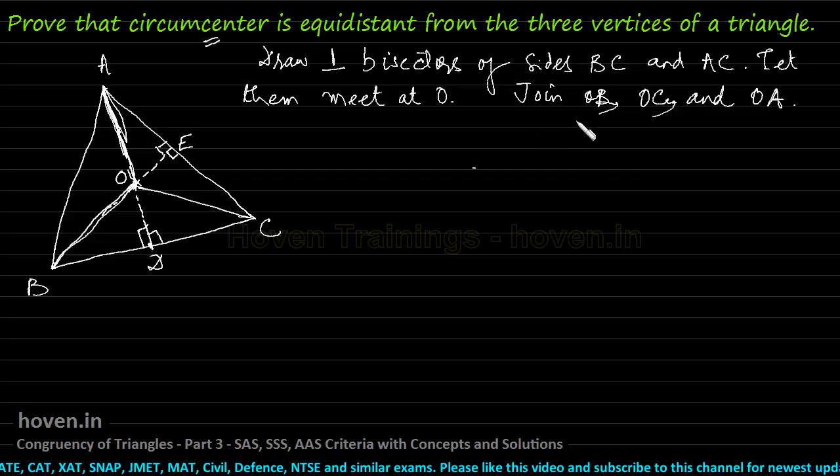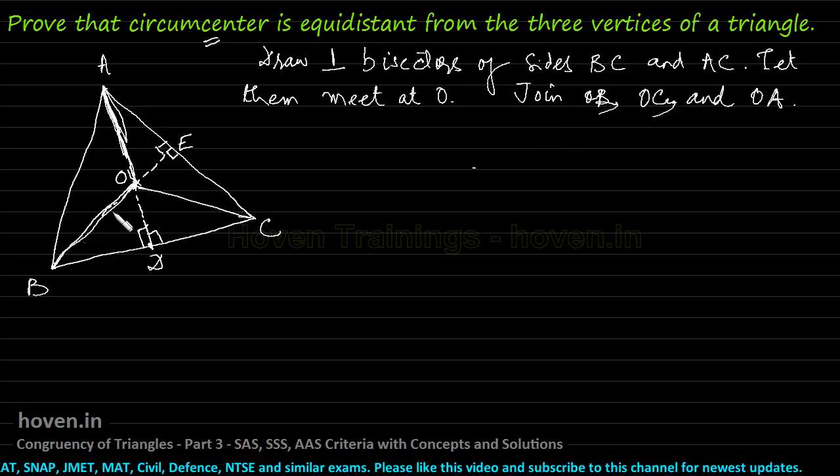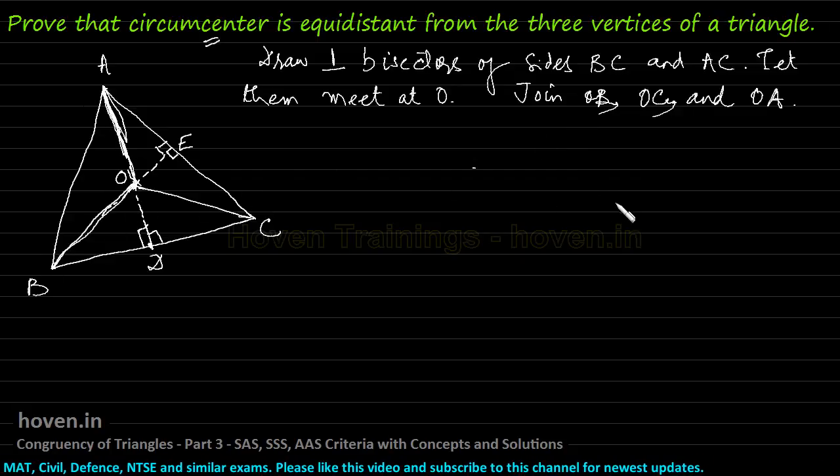We know from day-to-day life that the circumcenter is a point where perpendicular bisectors meet, but today we have to prove that they in fact do meet. So first of all we will start only with this part. Let us join OB, OC, and OA. We can obviously join straight lines from any point to points A, B, and C — absolutely no assumptions have been made.